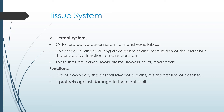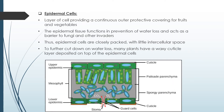Like our own skin, the dermal layer of a plant is the first line of defense — it protects against damage to the plant itself. Epidermal cells form a continuous outer protective coating for fruits and vegetables. As seen in the picture, they are present in the upper side of the plant structure, just after the cuticle. The epidermal tissue functions in prevention of water loss and acts as a barrier to fungi and other invaders.